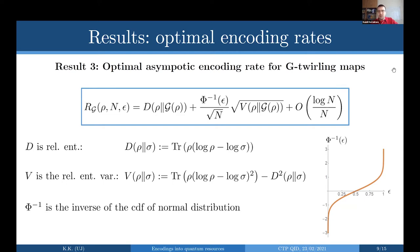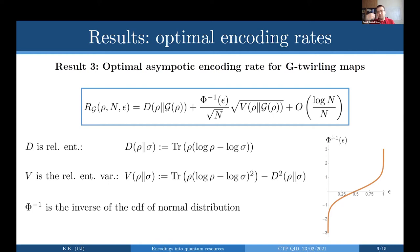Let me say a few words about these quantities. Everyone knows the relative entropy, but the relative entropy variance is less well known. If you look at the relative entropy definition, you can interpret it as the average of the operator log rho minus log sigma. The relative entropy variance is then the variance of this operator: the average of the operator squared minus the average squared. So it treats the log-likelihood ratio as an observable and takes its variance.